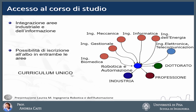We have a unique curriculum — there are no different curricula in Robotics and Automation. At enrollment, there is the possibility of subscribing to both the area of industrial engineering and the area of information engineering. The provenance of degrees comes from both industrial engineering and information engineering, which is typical of robotics and automation — a discipline that sits between the two areas of engineering.